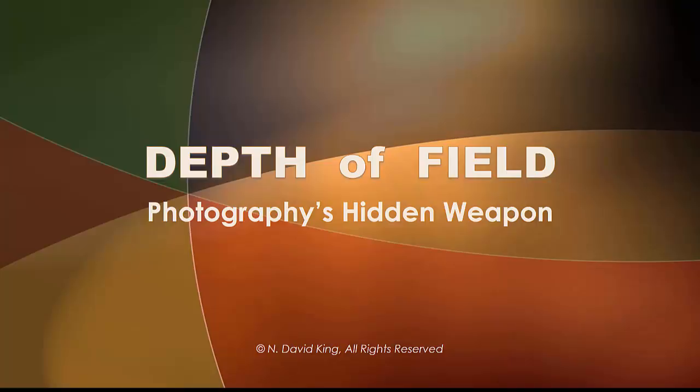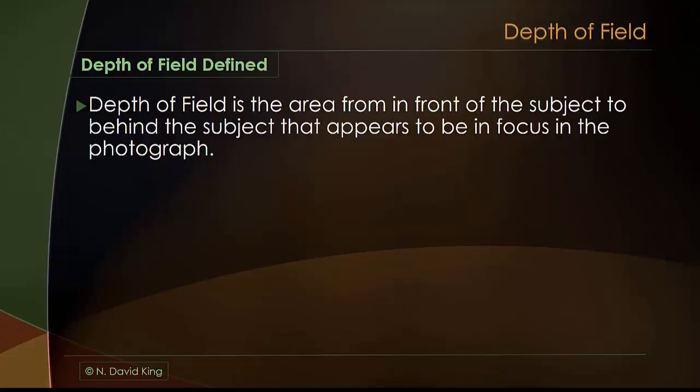There's going to be a question or two on it a little later. But it's really important for your mastery of your camera gear and your technique to produce the kind of shots you want. So let's start off: what is depth of field? How are we going to define it? Depth of field is the area from in front of the subject to behind the subject that appears — and the operative word is appears — to be in focus in the final image, whether it's a photographic print or a file. It's that area that looks like it's sharp.